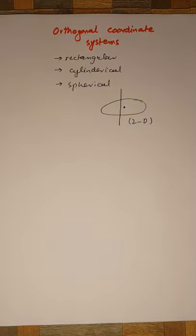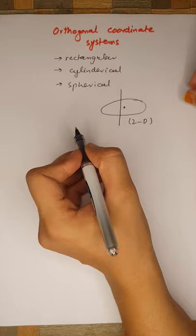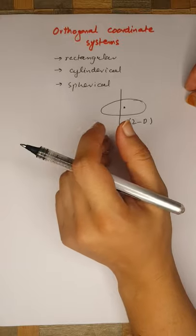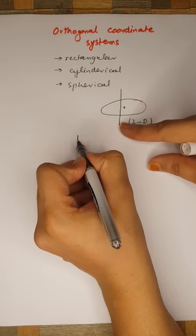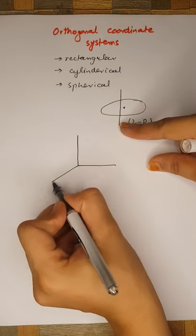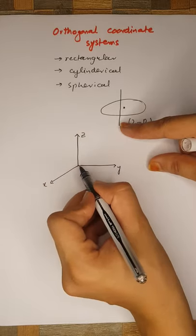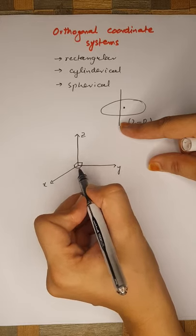Let's start with the first coordinate system: the Cartesian coordinate system, which was introduced many years ago. It is composed of three axes called the x, y, and z axes, and you can see all of them are at an angle of 90 degrees to each other.